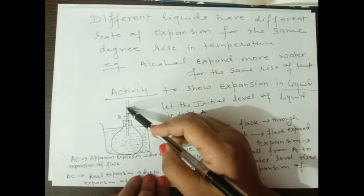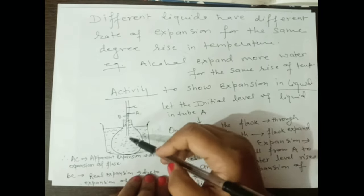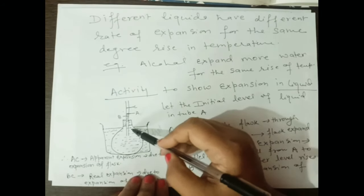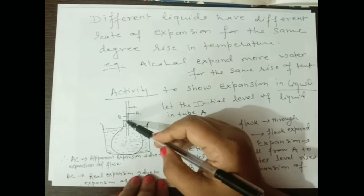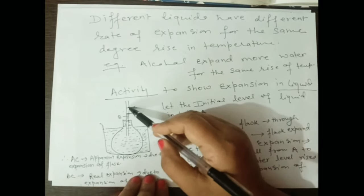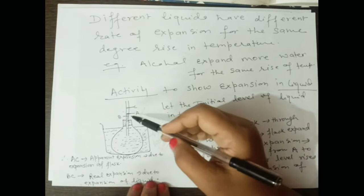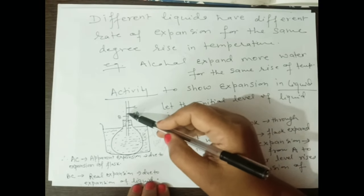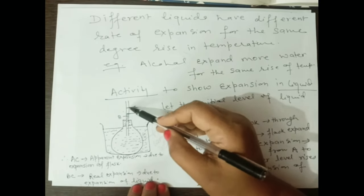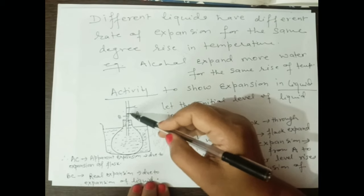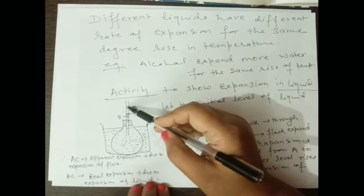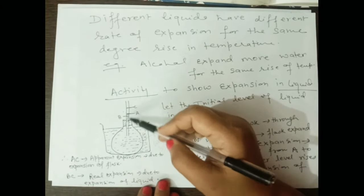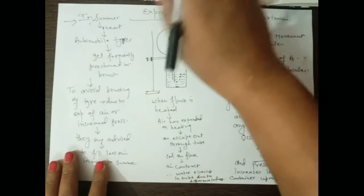So, the level of water first falls from A to B and then rises from B to C. The drop from A to B represents apparent expansion due to expansion of the flask, while the rise from B to C represents the real expansion of the liquid.